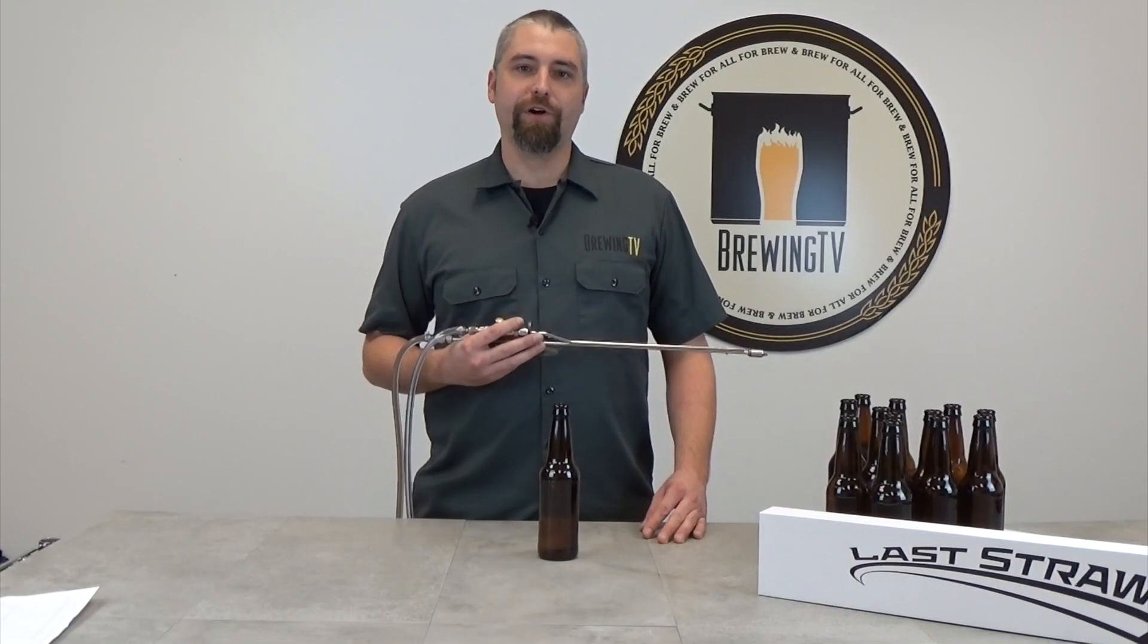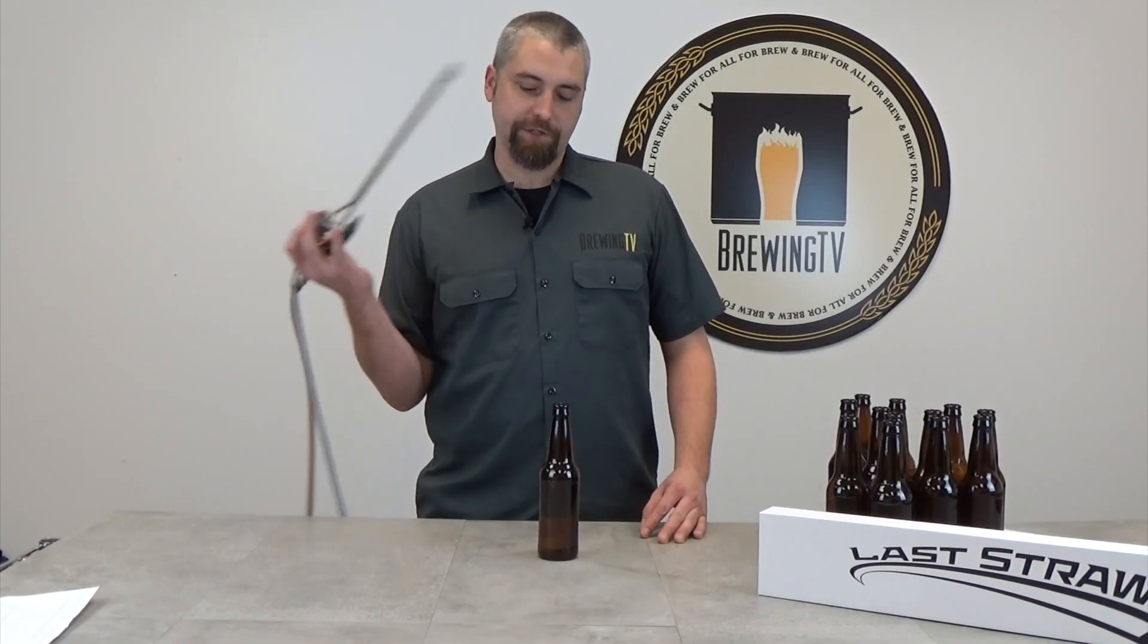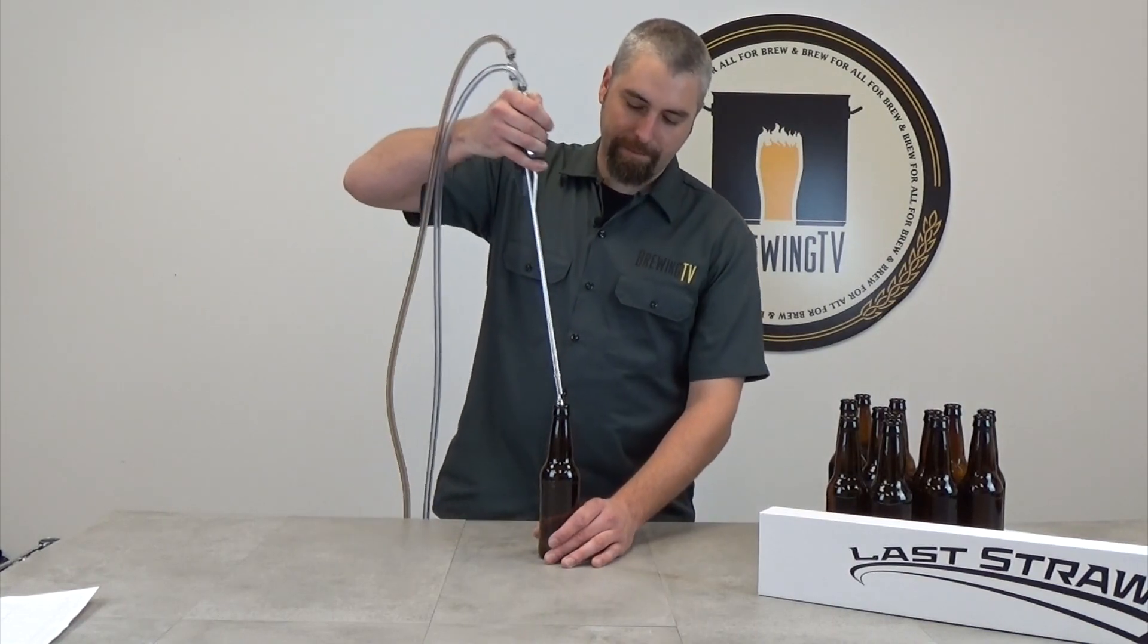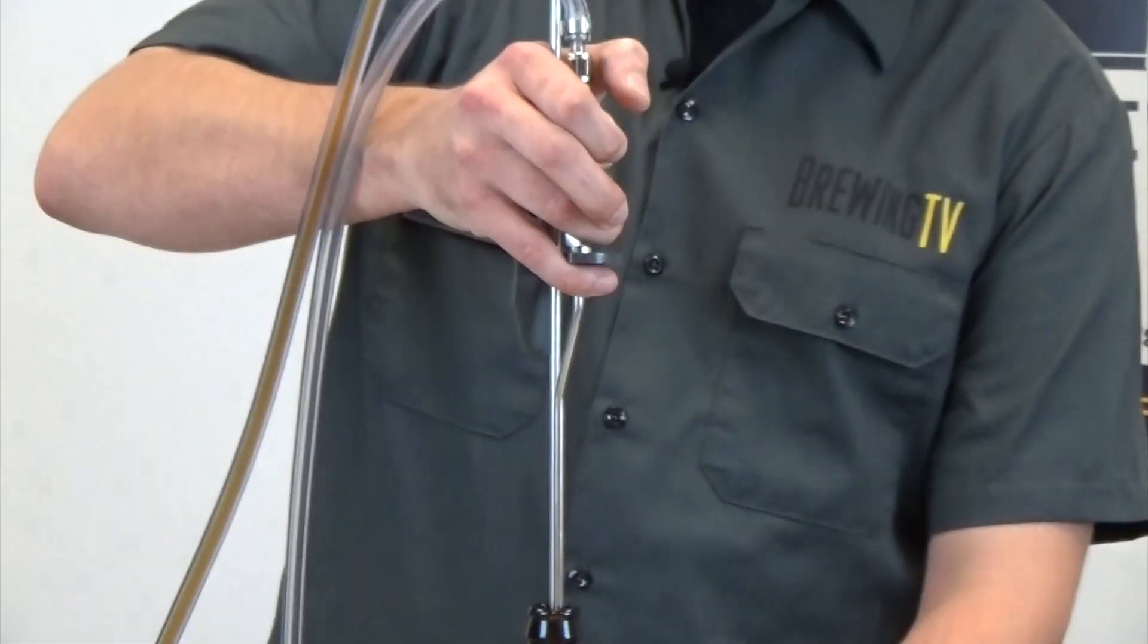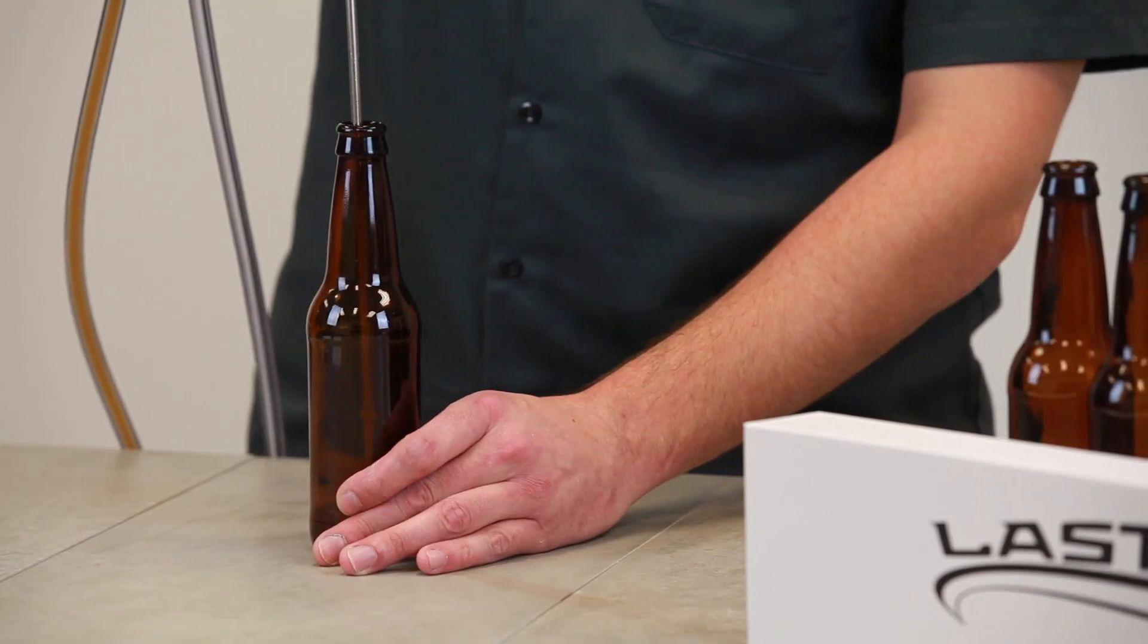Well, I bet you're ready to see how the Last Straw works. It's pretty simple actually. Insert it into the bottle, depress the CO2 button to purge the oxygen out, and simply press the filler down on the bottom of the bottle.